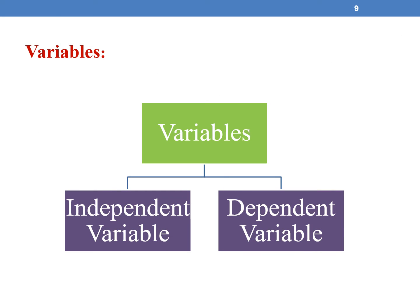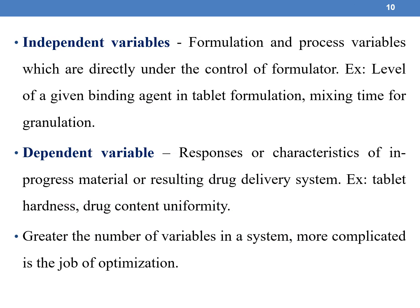Variables are of two types: independent variables and dependent variables. Formulation and process variables which are directly under the control of the formulator are called independent variables — for example, the level of a given binding agent in tablet formulation, or mixing time for granulation. Dependent variables are responses or characteristics of in-process material or the resulting drug delivery system — for example, tablet hardness and drug content uniformity.